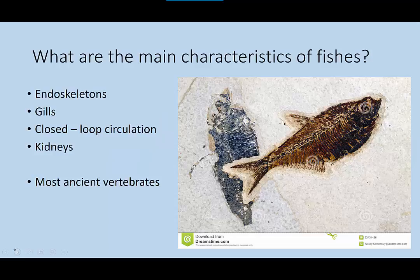So what are the main characteristics of fishes? You will notice that fish used to be the only accepted plural for fish, but we now accept fishes as well. Some of the main characteristics of fish are that they have an endoskeleton — the skeleton is on the inside. They have gills, a closed loop circulation, which means their blood can circulate throughout their entire body. They also have kidneys, and the kidneys are key to this organism's survival along with the gills — they sort of work together.